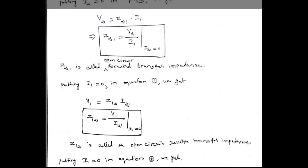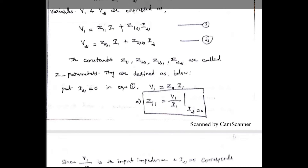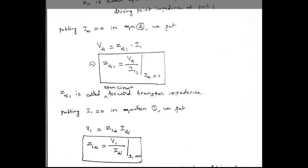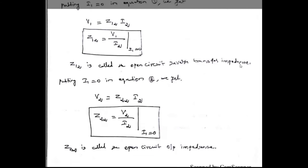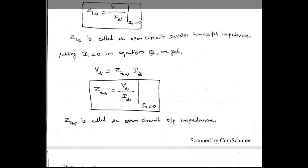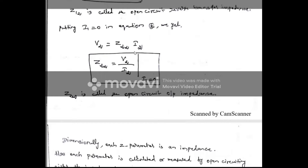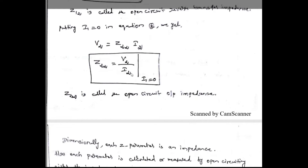With output port open-circuited, the output voltage V2 equals the voltage across the 5-ohm resistor, which is 5·I1. So Z21 = V2/I1 = 5 ohms. Next, make I1 = 0 (input port open-circuited). No current flows through the 10-ohm resistor. Applying KVL to the output loop: V2 = 15·I2 + 5·I2 = 20·I2. So Z22 = V2/I2 = 20 ohms.